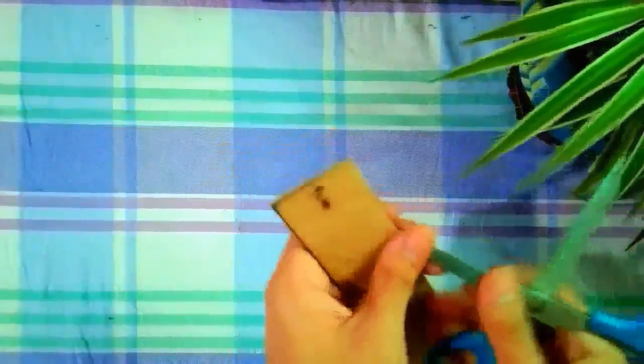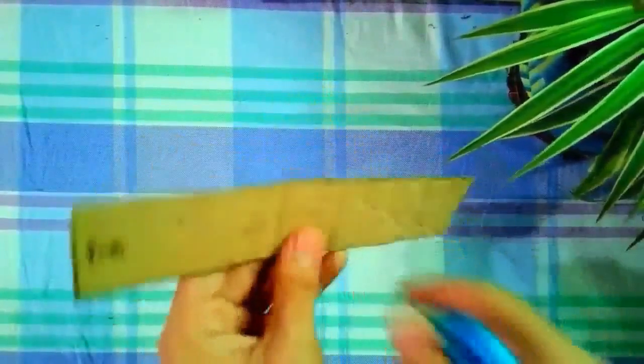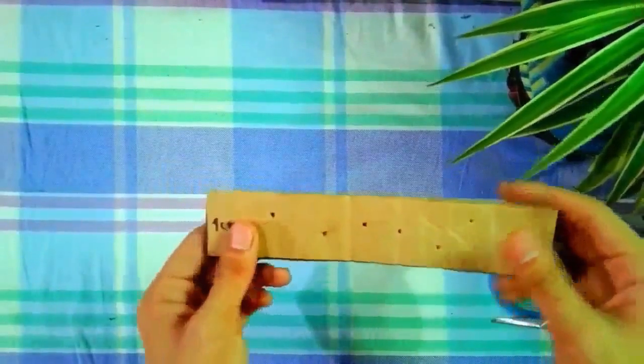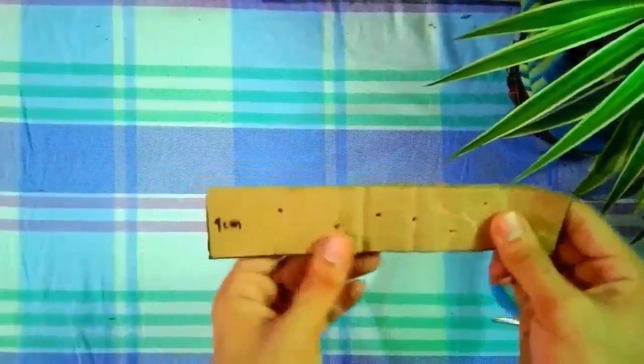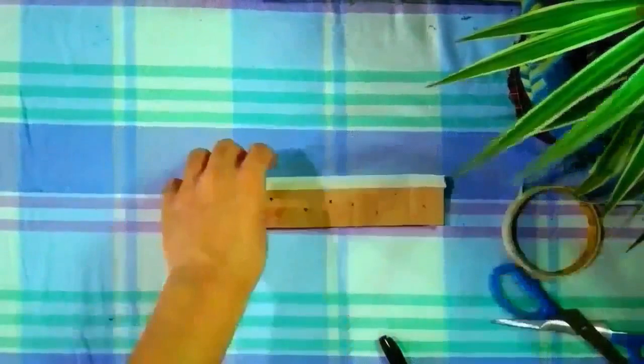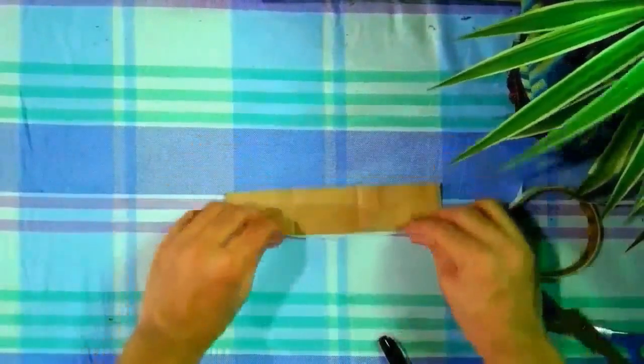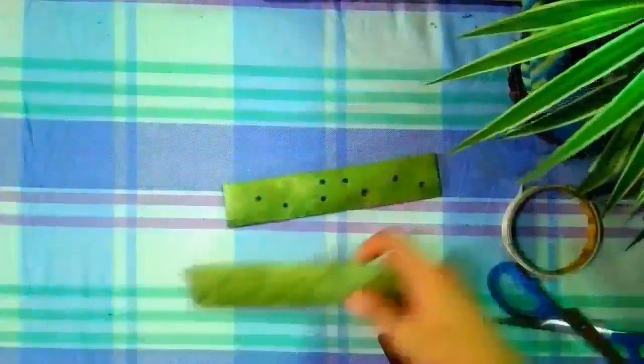Afterwards, poke some holes on the cell wall for the plasmodesmata. The plasmodesmata acts as a channel between the cell walls of plants to allow materials to pass from one cell to another. If you want the top part to be smoother, you can use masking tape. Here are the finished products.